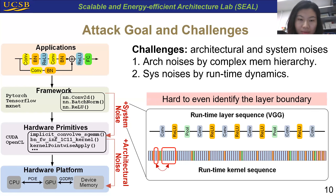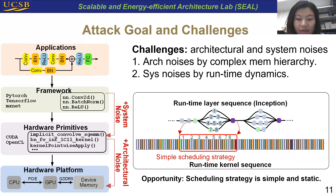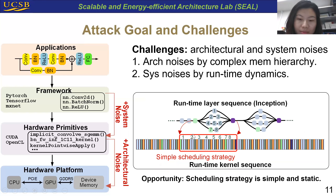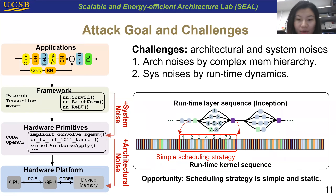We also observed an opportunity in the system stack. Although there are runtime dynamics, the scheduling methodology of the framework is simple and static. For example, this is the computational graph of the inception segment, which has four branches with eight layer operators. We observed that the layer operators will be executed one branch by another. Such phenomenon is observed in both PyTorch and TensorFlow. Therefore, we have a chance to learn the relation between the layer and the kernel transformations.